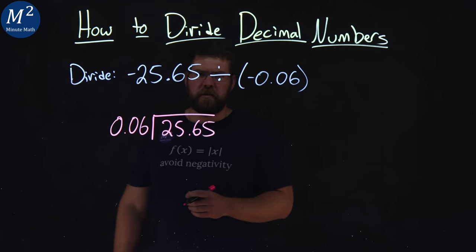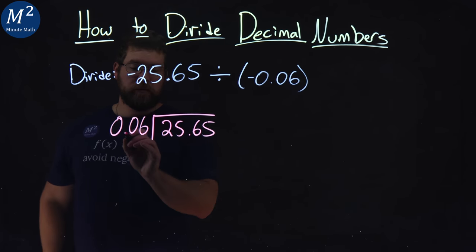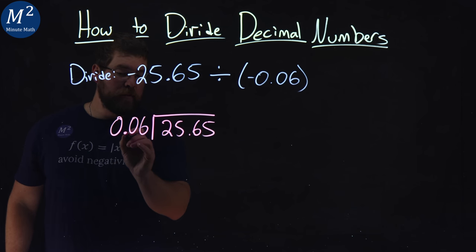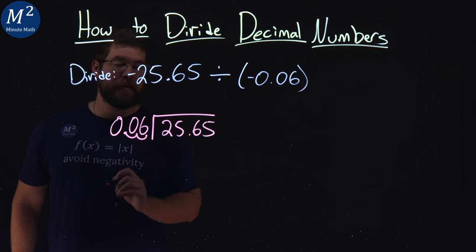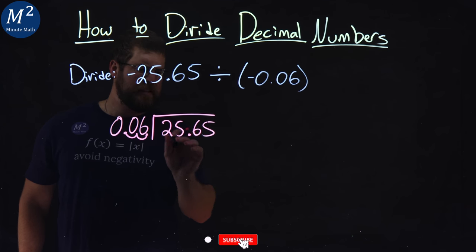Alright, back to this long division. I want to divide by a whole number. So what I'm going to do is move this decimal place over 2 units to make 6 a whole number, but I have to do the same thing with what's inside the long division.